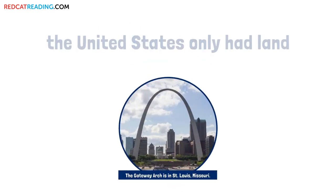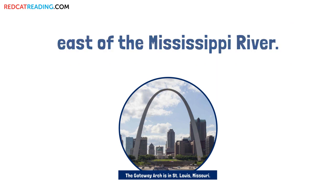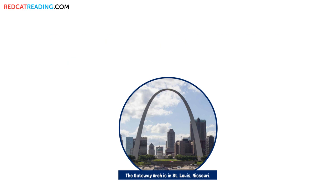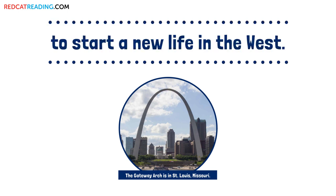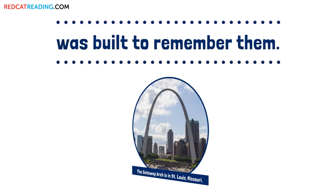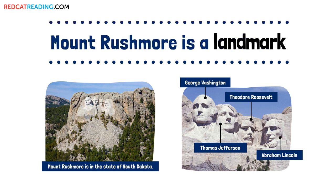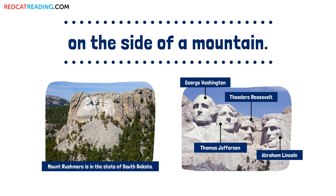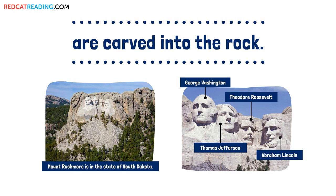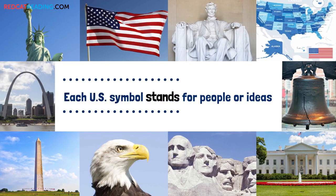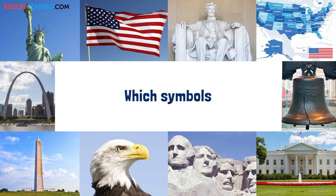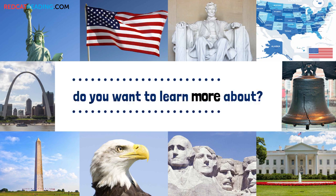Long ago, the United States only had land east of the Mississippi River. Many people faced dangers to start a new life in the West. The Gateway Arch was built to remember them. Mount Rushmore is a landmark on the side of a mountain. The heads of four U.S. presidents are carved into the rock. Each U.S. symbol stands for people or ideas that are important to Americans. Which symbols do you want to learn more about?